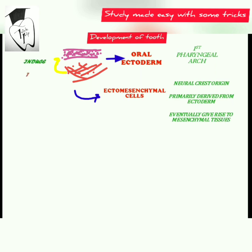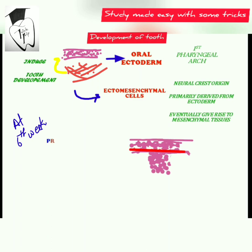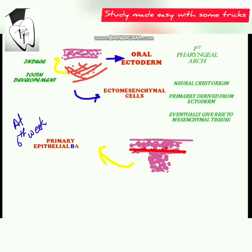They signal and induce the epithelium to proliferate for further development. At the sixth week, certain areas of the basal cells of the oral ectoderm proliferate and form a band-like structure called the primary epithelial band. The epithelial cells are in a continuous form and this continuous band of epithelial cells forms a horseshoe structure.